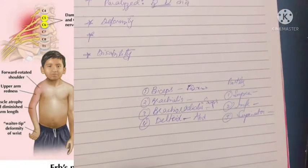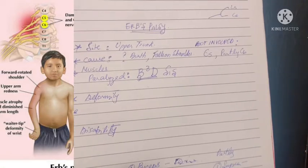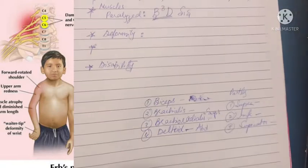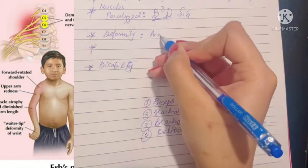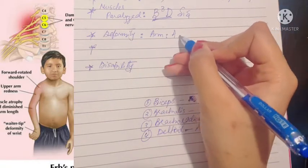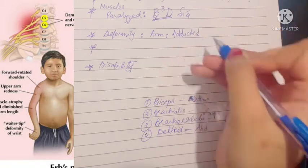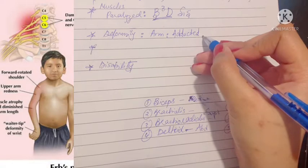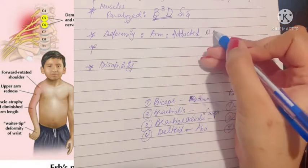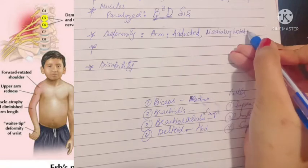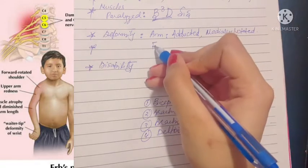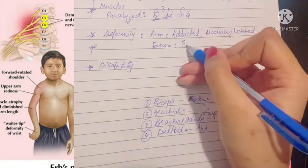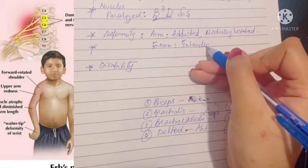The arm will be adducted as the abductors are paralyzed. The arm will hang by the side, adducted and medially rotated. The forearm, since biceps is responsible for its flexion and is paralyzed, will lie extended.